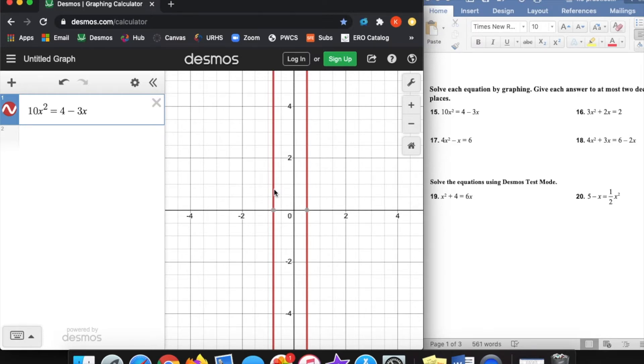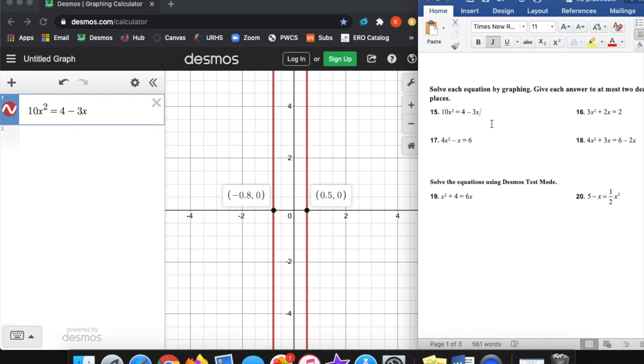What these red lines represent are actually the two solutions, the two answers to this. You see that these are two lines, and they cross the x-axis at a certain point. And when we click on those points, we see that the x value of this point on the left is negative 0.8, and this point is positive 0.5. So those would be my two answers to this number 15, x equals negative 0.8 and x equals 0.5. Those would be my two answers to this quadratic. It's really handy. I don't have any solving to do, any factoring to do, or any of that. I just have to plug it into Desmos and solve.